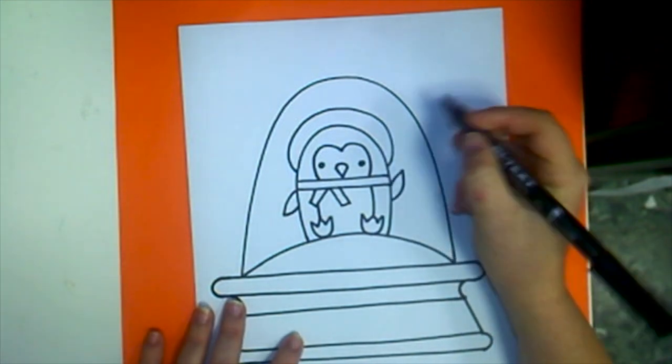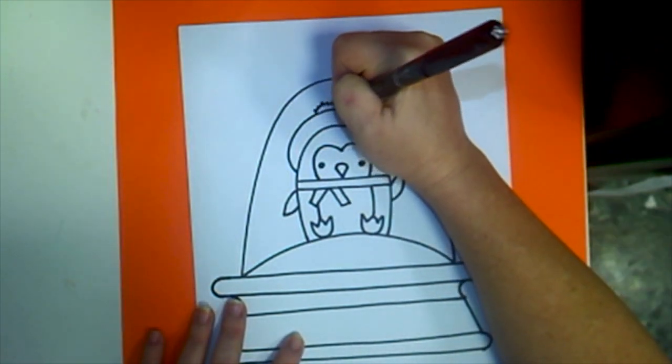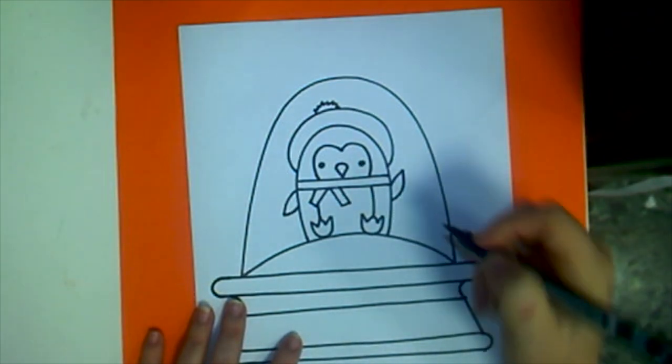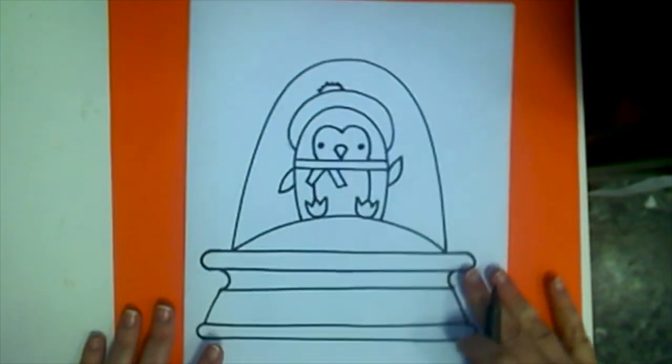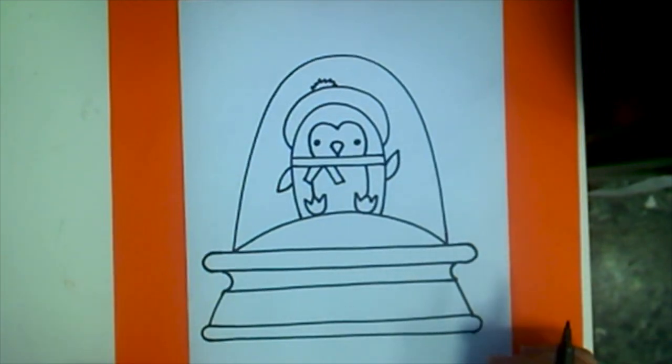And then off to the side of the body you're just going to add another curvy V and some spiky lines at the top of the hat. So now you can see that we've got a cute little penguin inside a snow globe and it's time for us to add some details.